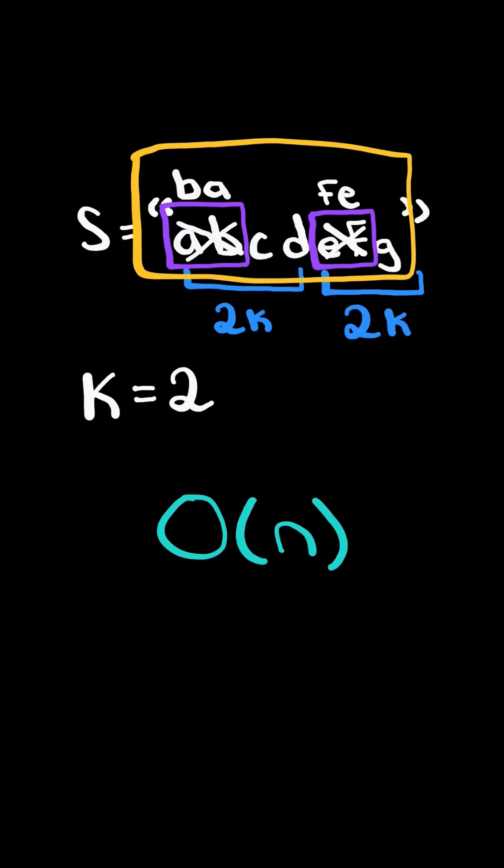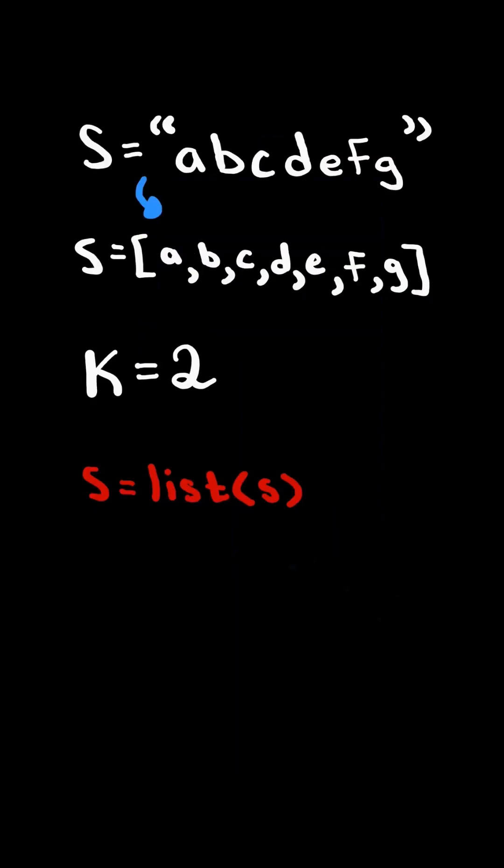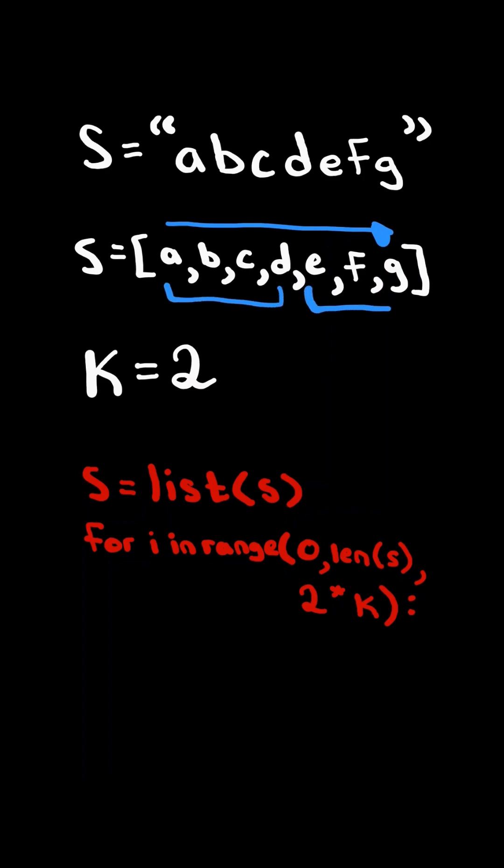We will solve this in O(n) time and space. First, we convert the string s into a list of characters. We then iterate from 0 to the length of the list, and we increment by 2k.